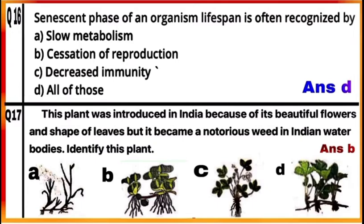Question 17: This plant was introduced into India because of its beautiful flowers and shape of leaves, but it became a notorious weed in Indian water bodies. This plant is B — Water Hyacinth or Eichhornia crassipes, also called the Terror of Bengal. This plant spreads by vegetative propagation all over water bodies in a very short period of time and it is very difficult to get rid of it.